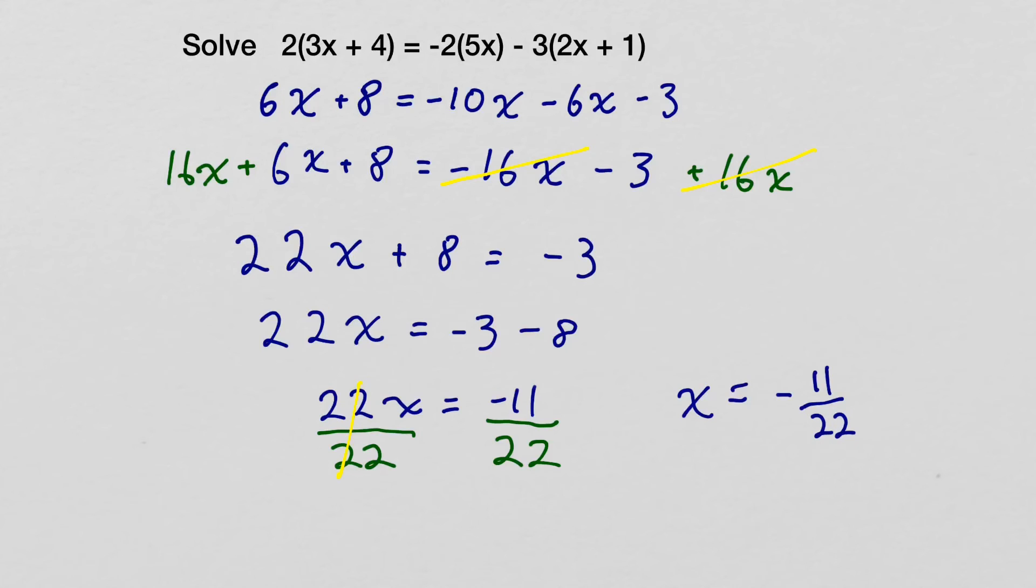Wait a sec. We can simplify that. This simplifies to negative 1 half. Because 11 divided by 22 simplifies, we can divide both top and bottom by 11 to get 1 over 2. So our final answer is negative 1 half. You might see your answer as negative 0.5. So choose the one that best matches your result.